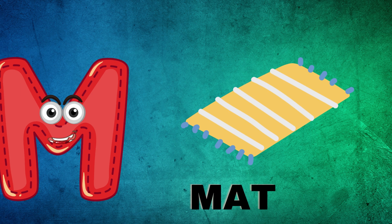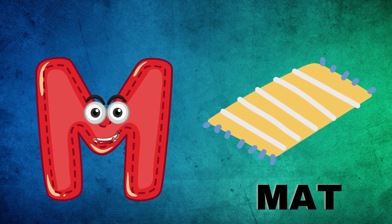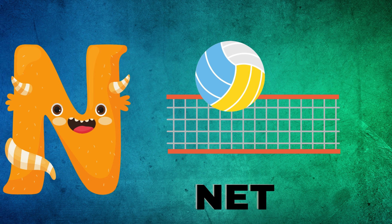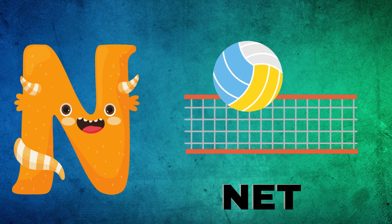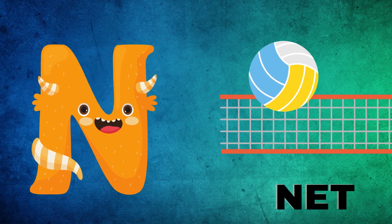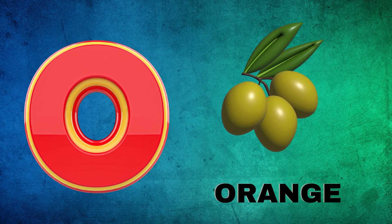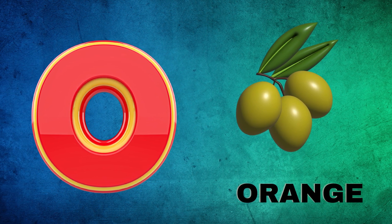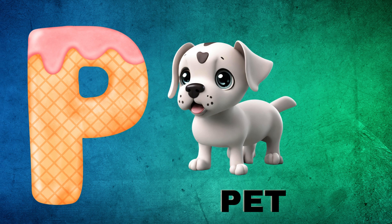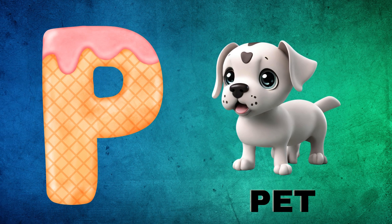M is for Mat, M-M-Mat. N is for Net, N-N-Net. O is for Orange, O-O-Orange. P is for Pet, P-P-Pet.